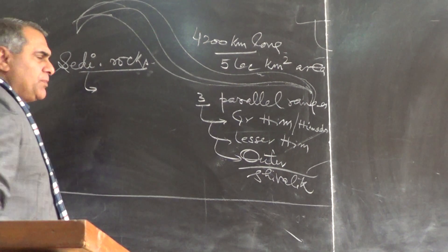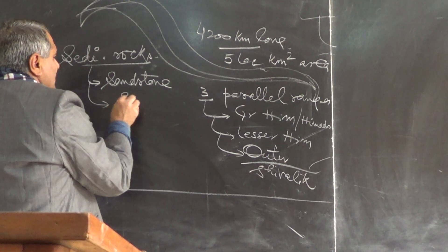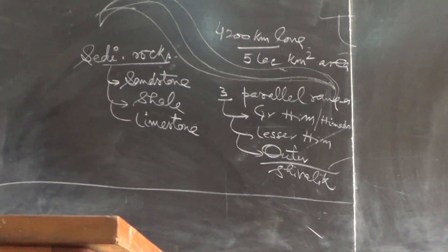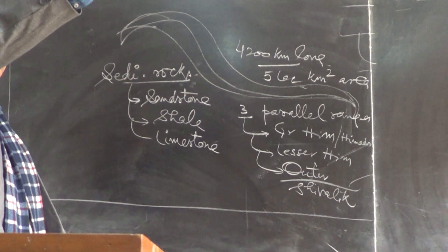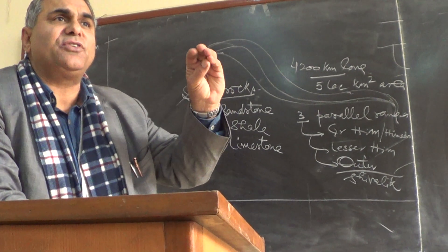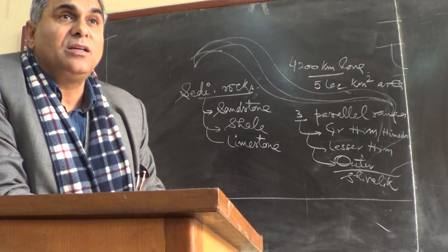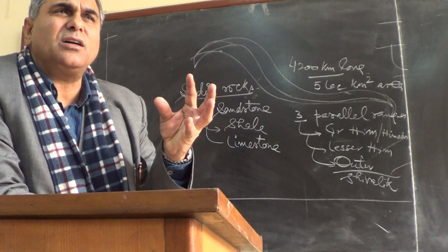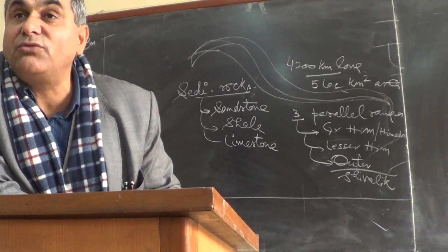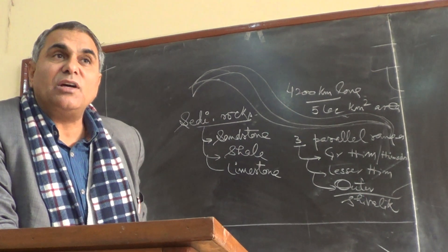The Himalayan system is basically composed of three sedimentary rocks: sandstone, sand, and limestone. All material was brought by rivers from the Tibetan plateau and deposited particle by particle. When the sand accumulated and lithified — became hard — it is known as sandstone. The system also contains shale, which is a muddy accumulation of material that has lithified. That is why Himalayan rocks are very soft, brittle, loose, and chemically reactive, being full of limestone.